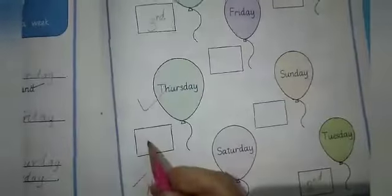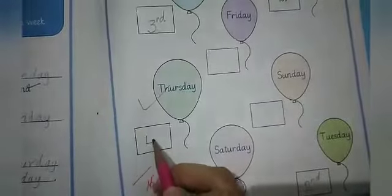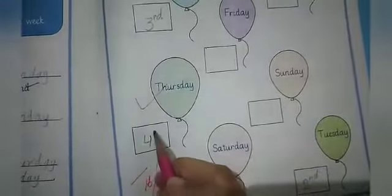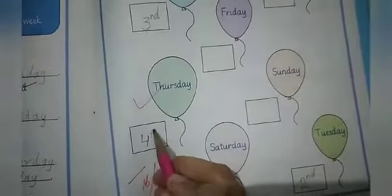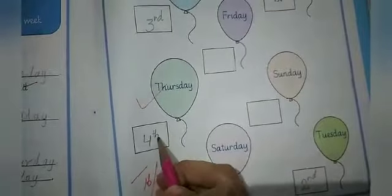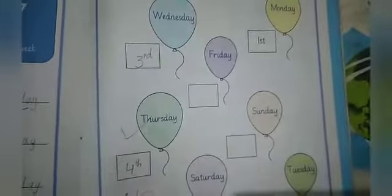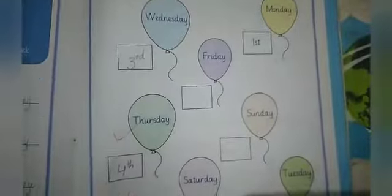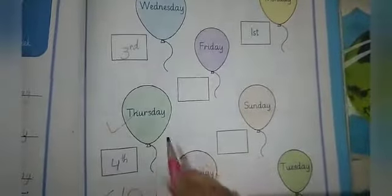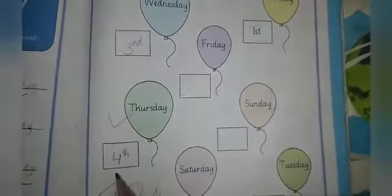Monday, Tuesday, Wednesday, Thursday — Thursday is the 4th day of the week. You have to write them in order: who is 1st, who is 2nd, who is 3rd, and who is 4th. Thursday is the 4th day of the week.